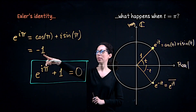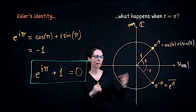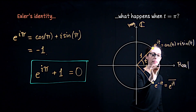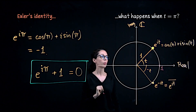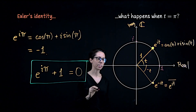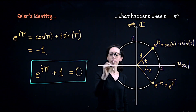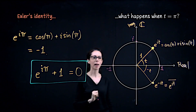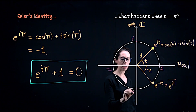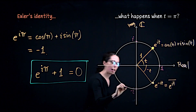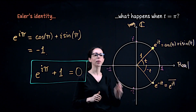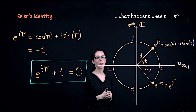We can also see this geometrically on the complex plane. If t is 0 on the circle of modulus 1, that puts us at 1 on the real axis. If t is pi over 2, we're at i on the imaginary axis. When t is pi, we're at negative 1 on the real axis — confirming Euler's identity. At 3 pi over 2, or negative pi over 2, we're at negative i. Notice this matches the cyclic powers of i: 1, i, negative 1, negative i, repeating as we go around the circle.